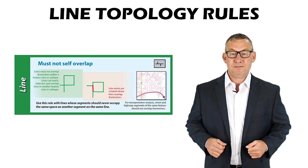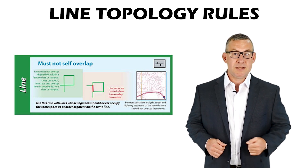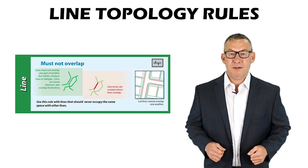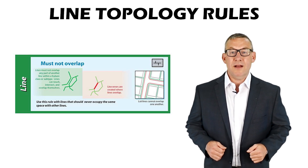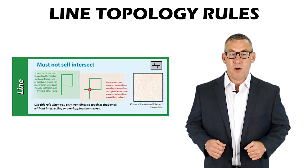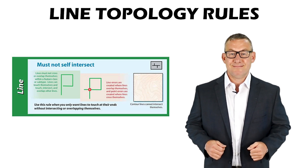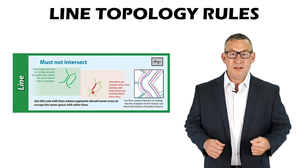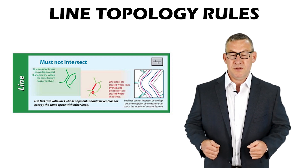Must Not Self-Overlap — lines can't overlap themselves or have two common connected vertices. Must Not Self-Intersect — lines can't overlap any line in their feature class or have two common connected vertices. Must Not Cross — lines can't cross any line in their feature class.